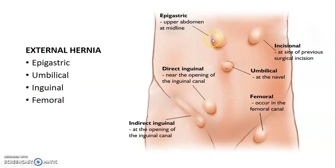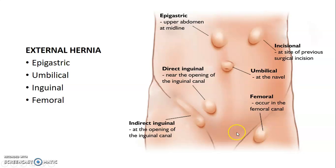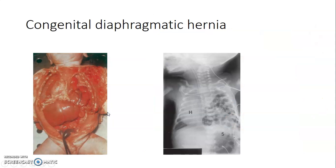External hernias can occur at the epigastric region of the abdomen, incisional hernias after surgery, umbilical hernias at the umbilicus, and inguinal hernias — of which there are two types: direct inguinal hernia and indirect inguinal hernia. There is also a femoral hernia that commonly occurs through the femoral canal and is mainly seen in females.